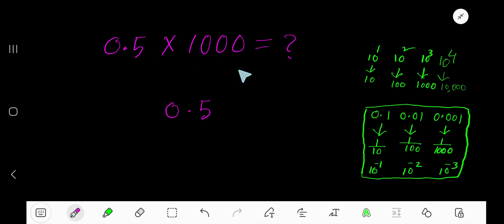To multiply a decimal by a power of 10, just count the number of zeros in the power of 10 number and move the decimal point from left to right equal to the number of zeros. Here, the number of zeros is 3, so you need to move the decimal point 3 places from left to right.